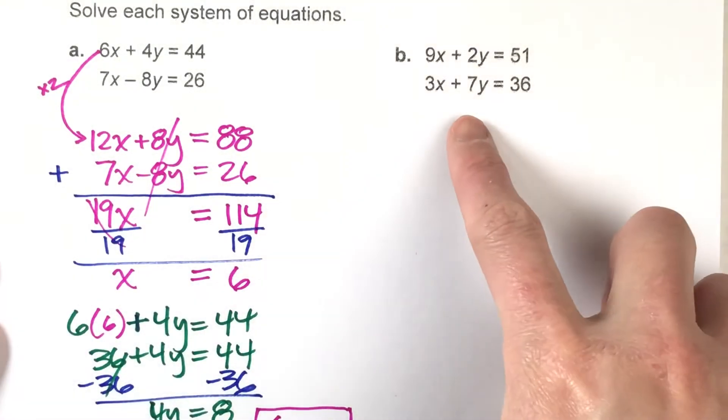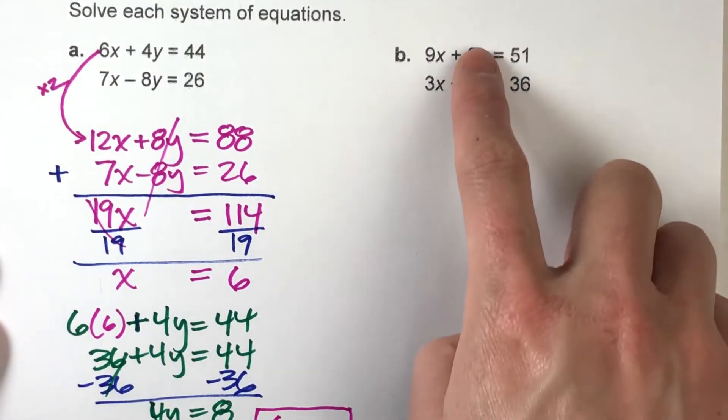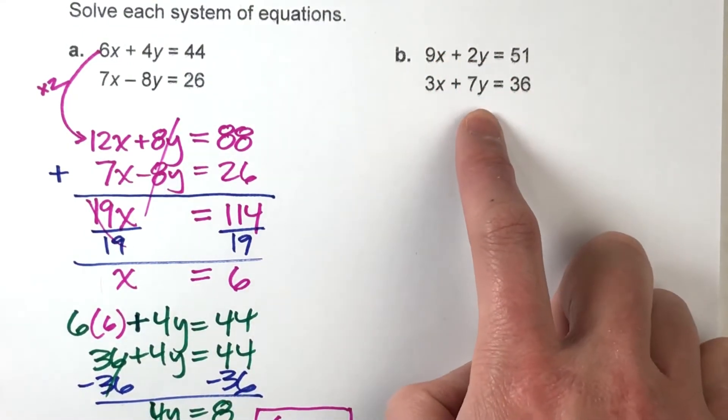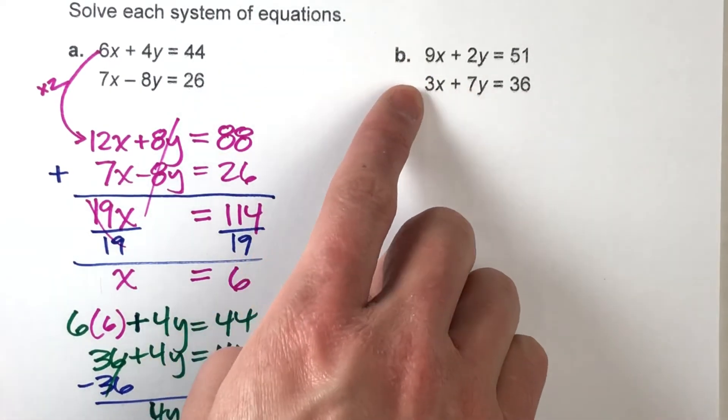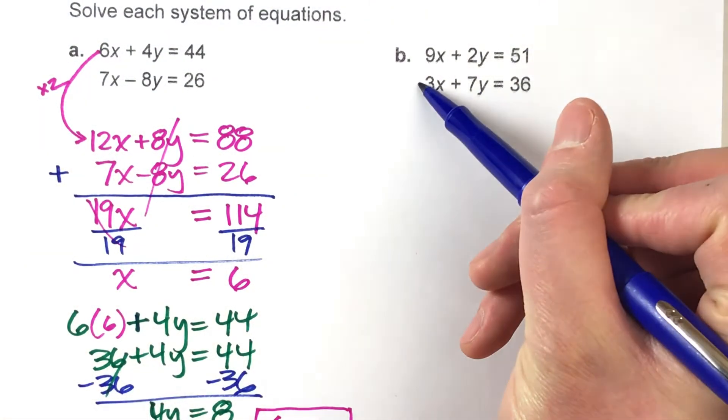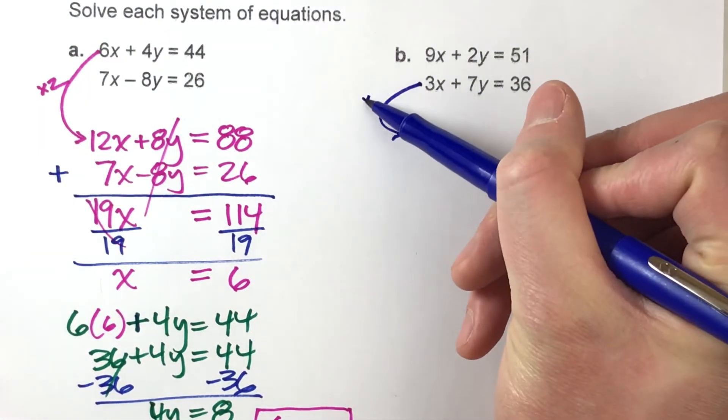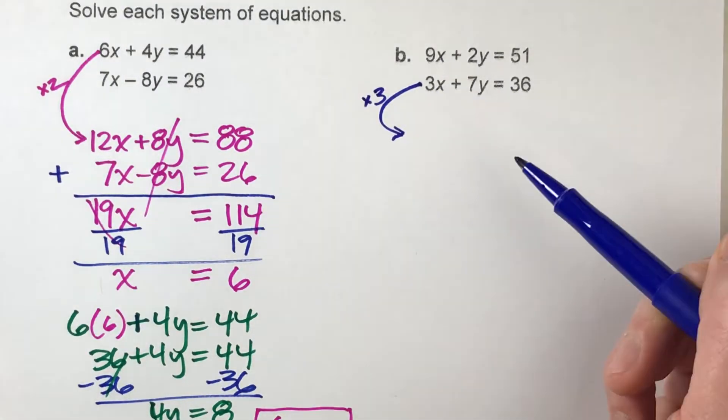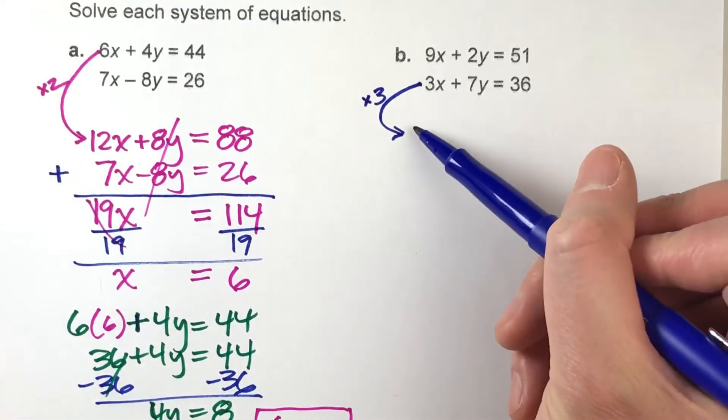In this case I'm not gonna multiply my Y's because there's nothing I can multiply 2 or 7 by so that they'll equal each other. But look at the 9 and the 3—this one's an easy multiplication problem because I can multiply this second equation by 3 and then my X's will match up.